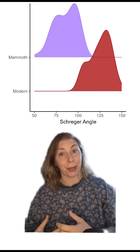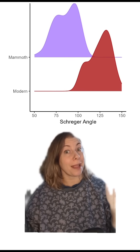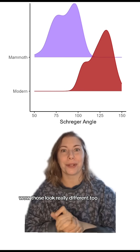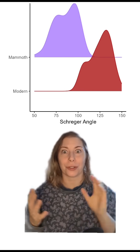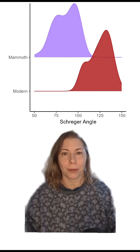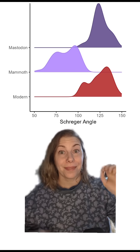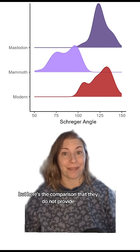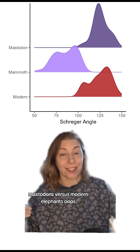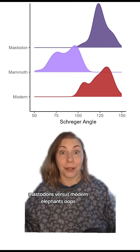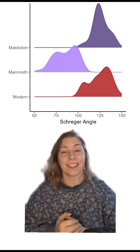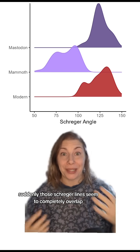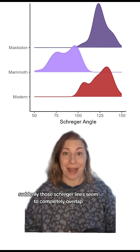And then they cross-compared mammoths and modern elephants. Those look really different too — such clear separations, kind of. But here's the comparison that they do not provide: mastodons versus modern elephants. Whoops! Suddenly those Schreger lines seem to completely overlap.